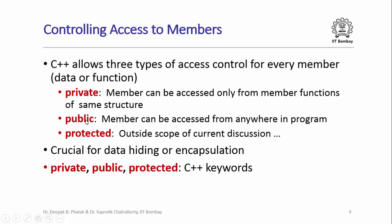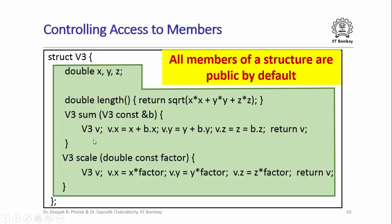Declaring member functions as well as data members as private or public is very important if we want to hide or expose data, or hide or expose interfaces to the rest of the program. If you look at the structure V3 that we had studied earlier, all three data members of V3 as well as the three member functions of V3 could be accessed from anywhere in the program — they were all public. In C++ all members of a structure are public by default.